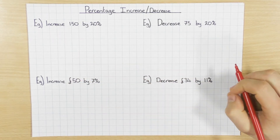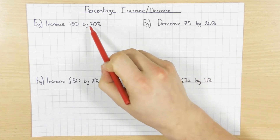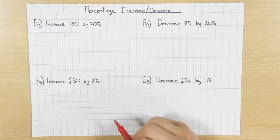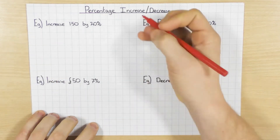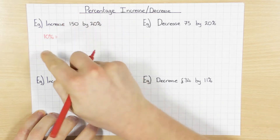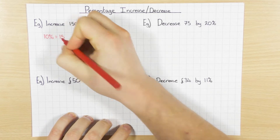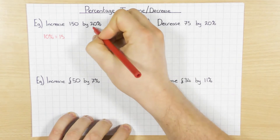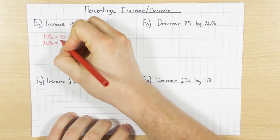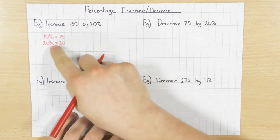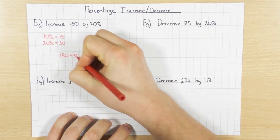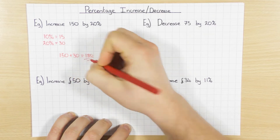So if I want to increase 150 by 20% without a calculator, I need to work out what 20% is and increase it. To find 20%, I'm going to find 10% because that's nice and easy. So 150 divided by 10 is 15. If I want 20%, I just double it — double 15 is 30. So 20% of 150 is 30. And because I'm increasing, I add them together: 150 plus 30 gives me 180 for my final answer.